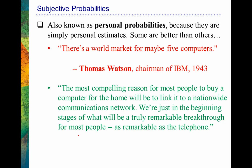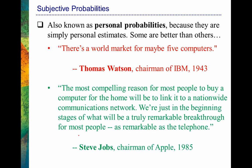Contrast that with this quote: 'The most compelling reason for most people to buy a computer for the home will be to link it to a nationwide communications network. We're just in the beginning stages of what will be a truly remarkable breakthrough, as remarkable as the telephone.' When talking about this communications network, he's essentially talking about the internet. This probability estimate was essentially saying the probability is high that our company will sell computers — that was Steve Jobs, chairman of Apple in 1985.